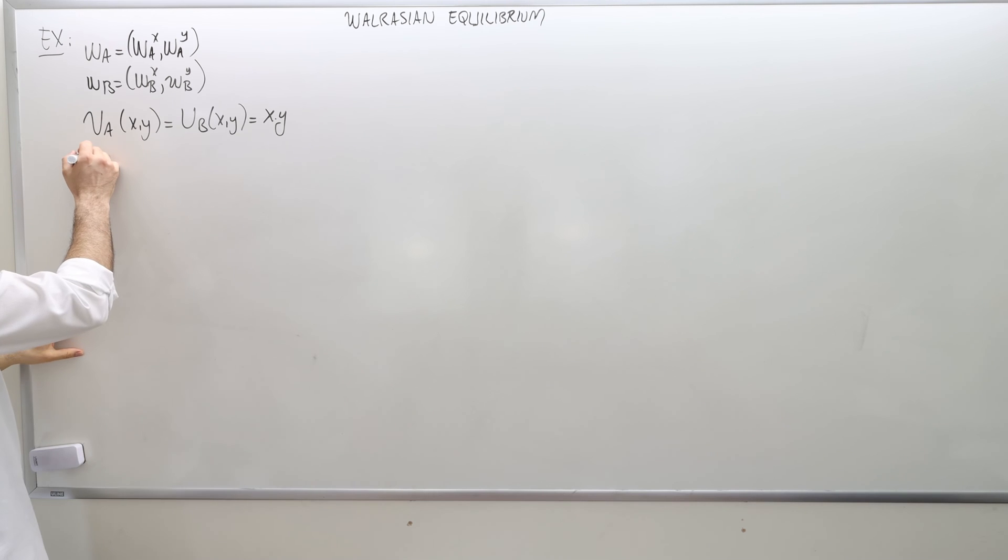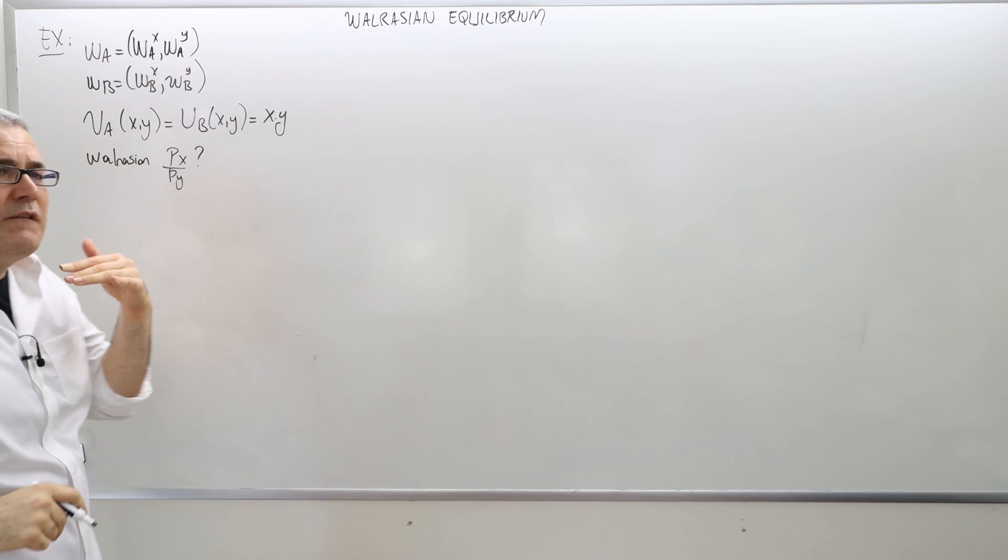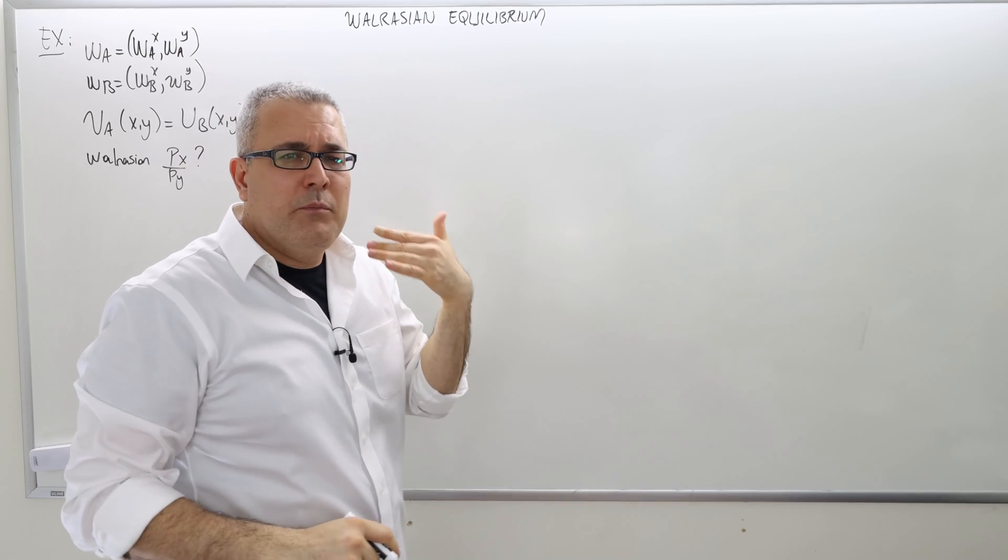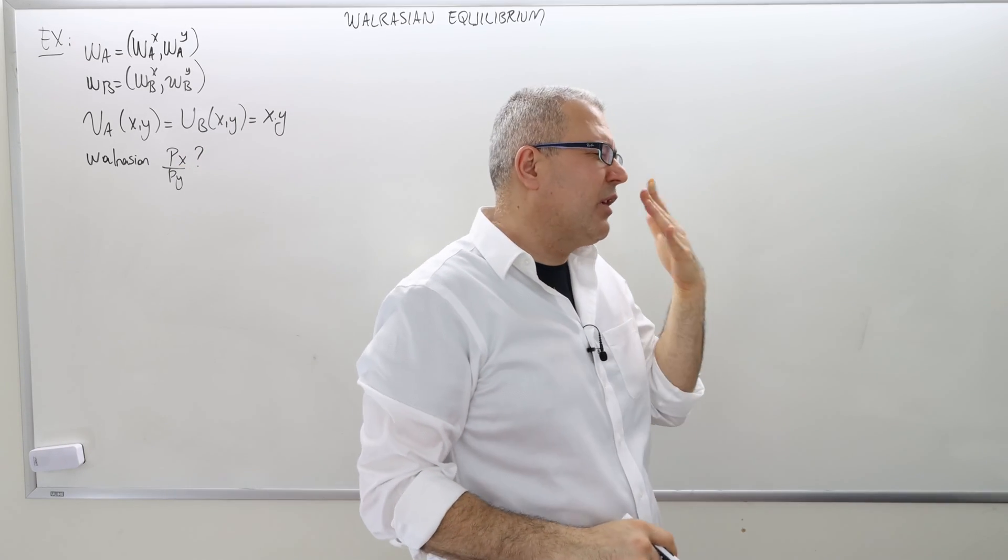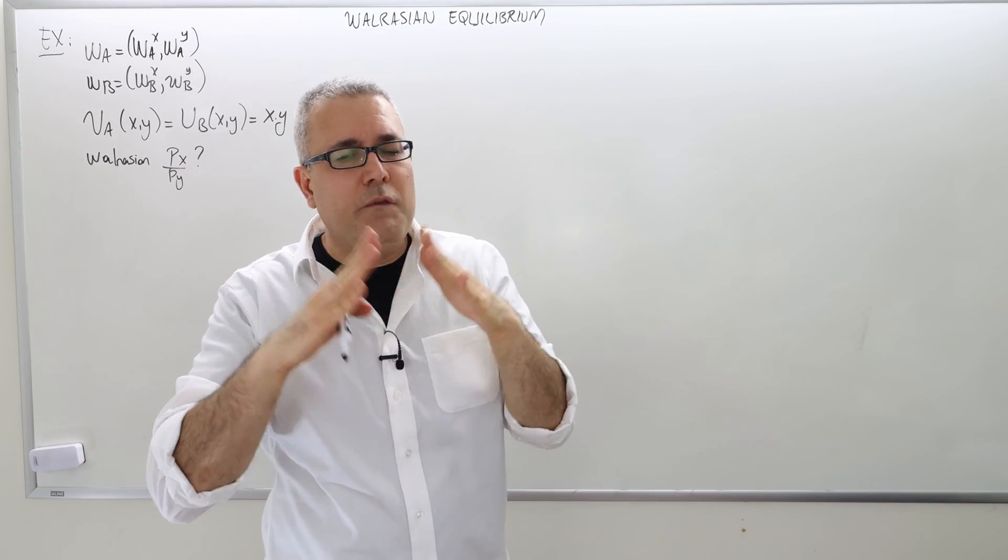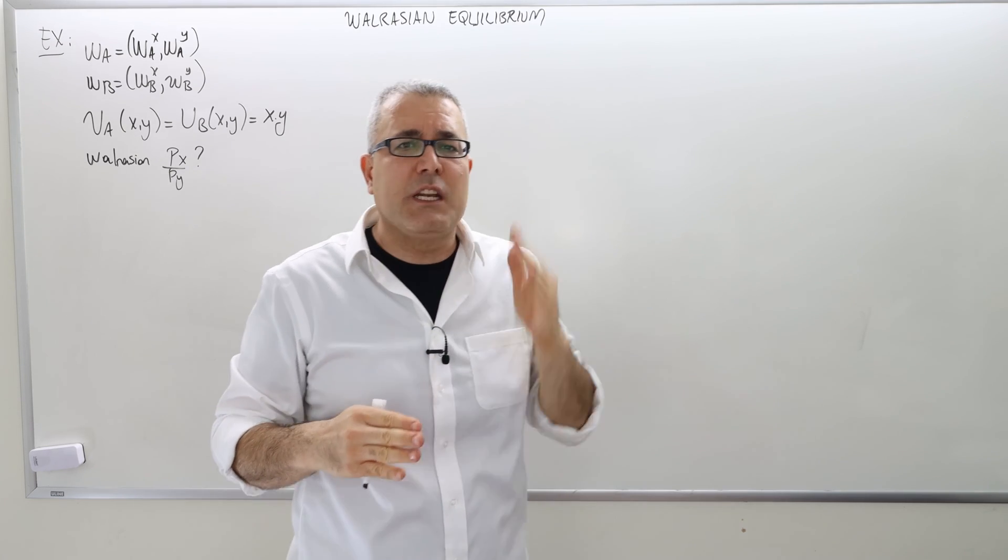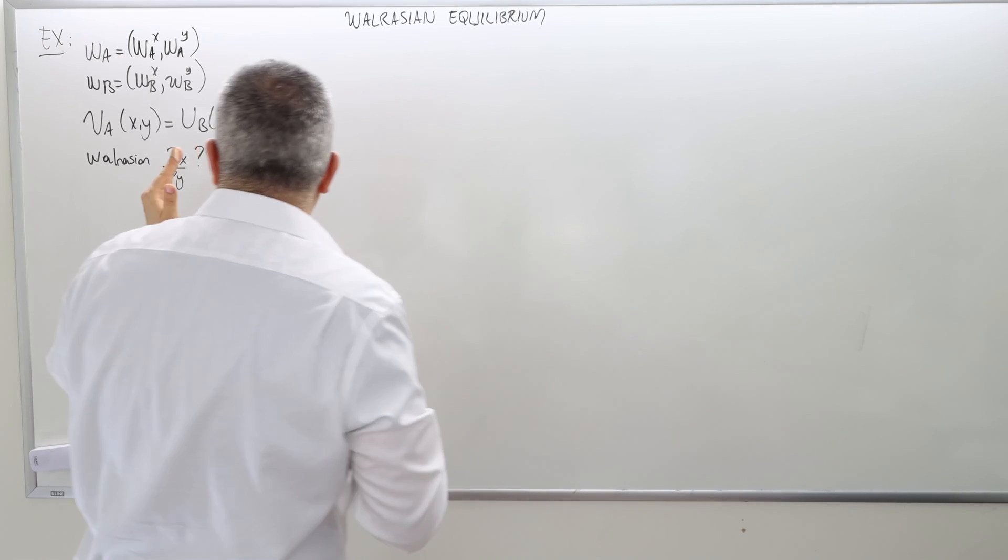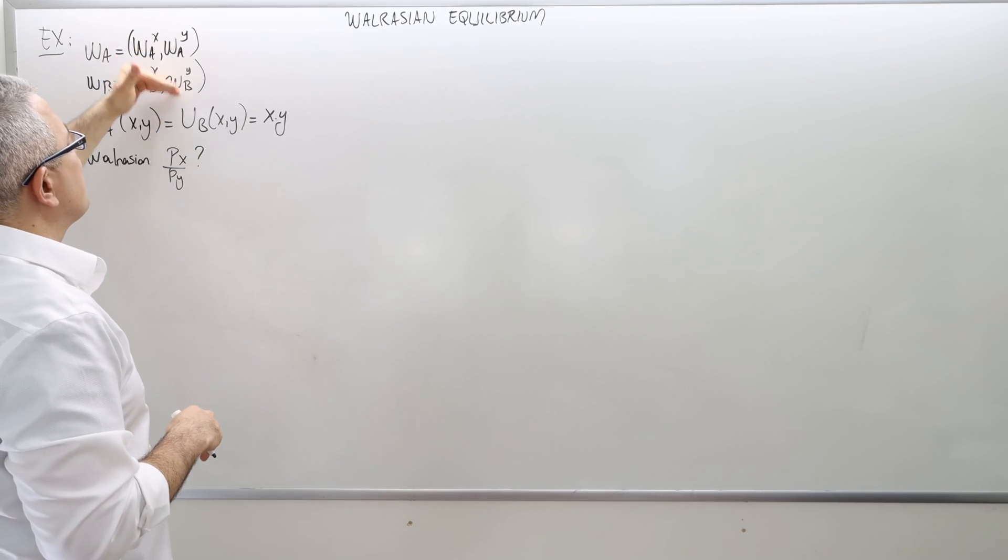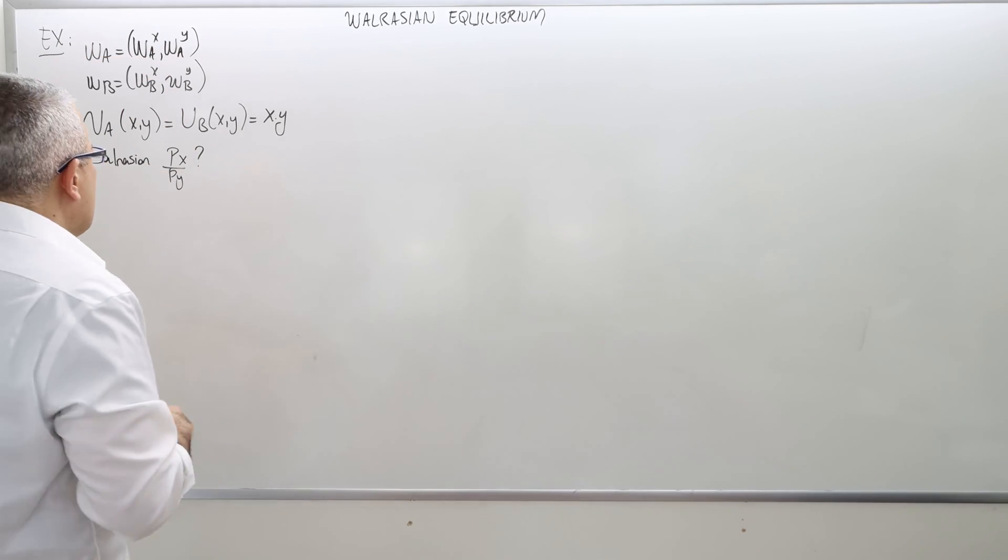So the question is, what is the Walrasian price ratio, px/py? There's going to be infinitely many prices in the Walrasian equilibrium, but the price ratio is going to be unique. And so we need to find that. And obviously, it's going to be a function of the initial endowments.